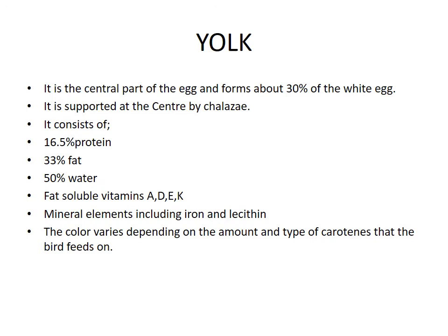The yolk is the central part of the egg and forms about 30 percent of the egg weight. It is supported at the center by the chalaza. It consists of 16.5 percent proteins, 33 percent fat, and 50 percent water. Fat-soluble vitamins A, D, E, and K are also present, and mineral elements including iron and lecithin are found in the yolk. The color of the yolk varies depending on the amount and type of carotene that the bird feeds on.